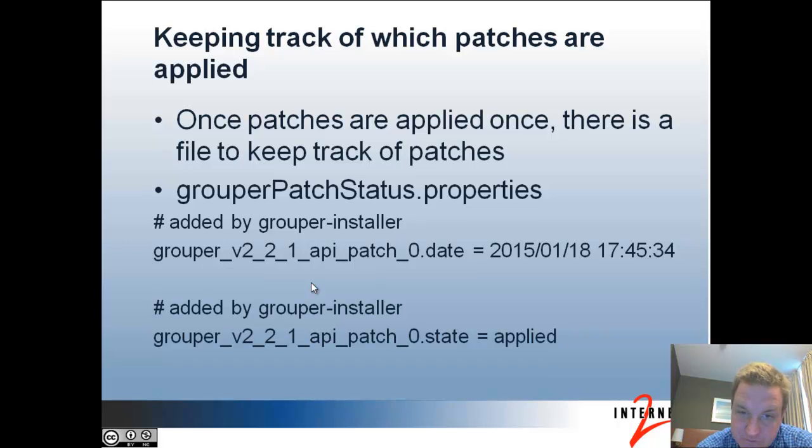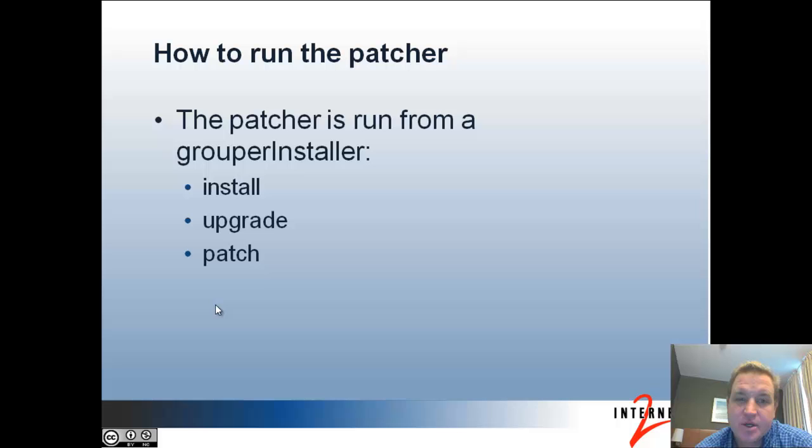Once patches are applied, there's a file to keep track of which patches have been applied, and that file is called grouper_patch_status.properties. This file is going to have a list of the patches that were applied or reverted and their state, including a timestamp for when it occurred and the fact that the patch is applied.